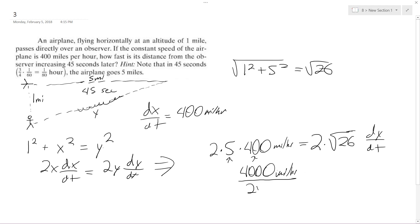And pretty much, we're just going to divide this by 2 root 26, and then we're going to get dy/dt, and what we end up with approximately is 392 miles an hour.